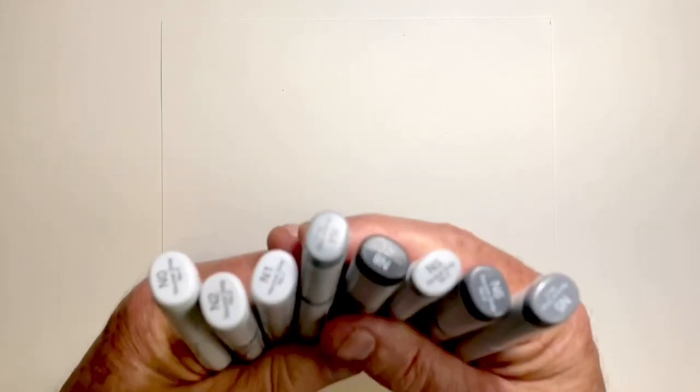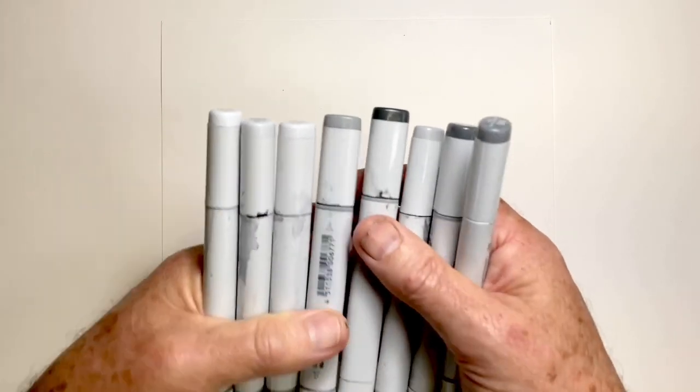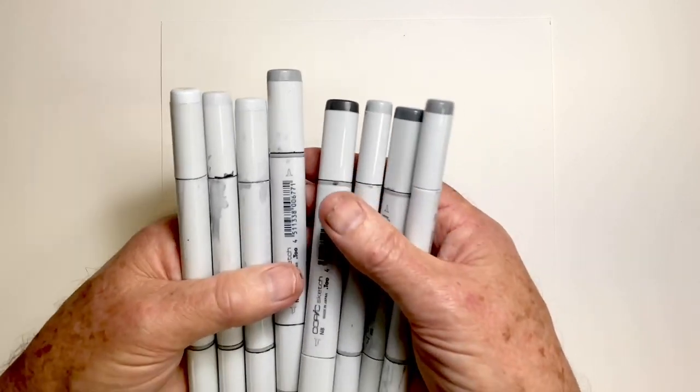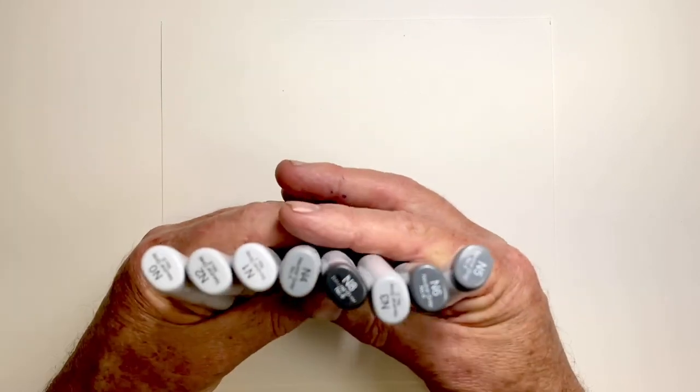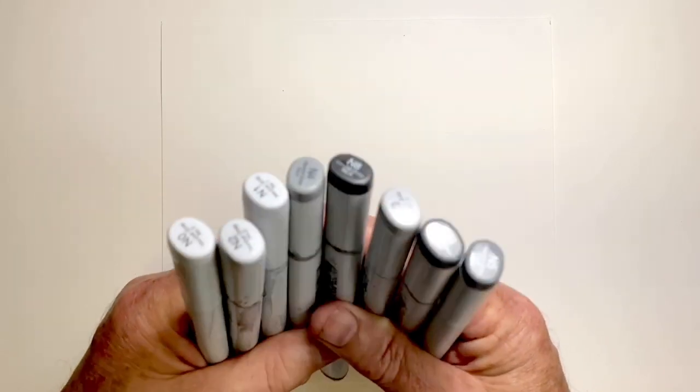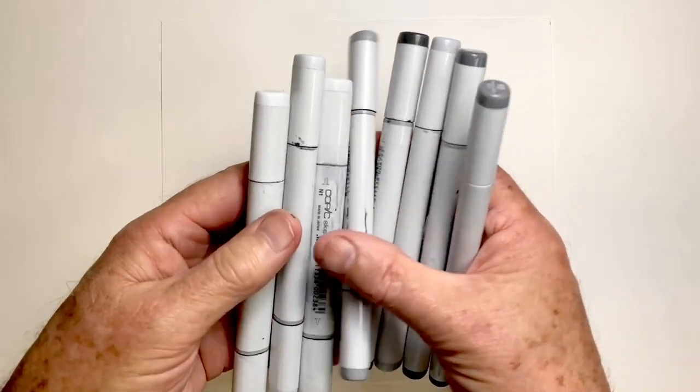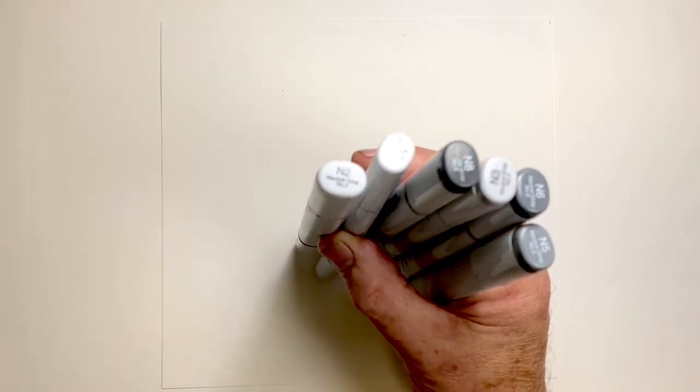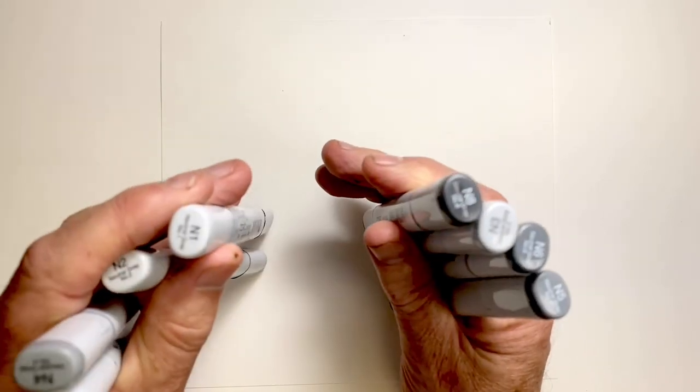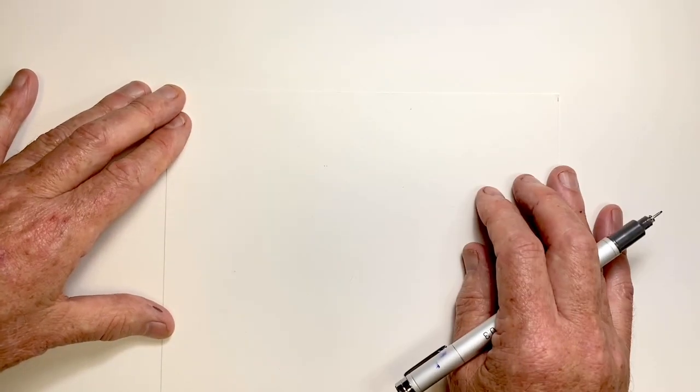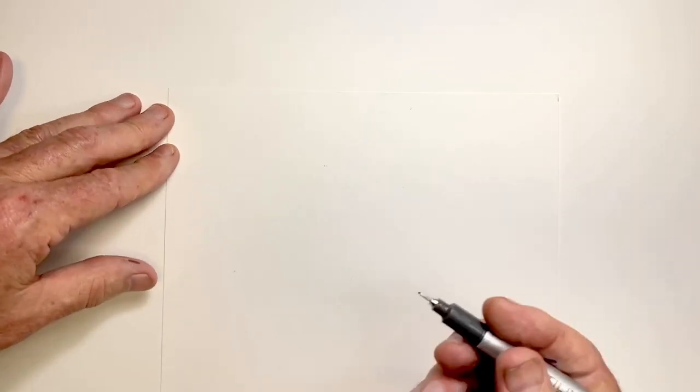Second, assemble the range of markers that you would normally be using. I work in a single grey in my drawings, so I have a range of markers in the same neutral grey color. The ones I use are Copic markers from 0 to 8, although I don't use a 7.